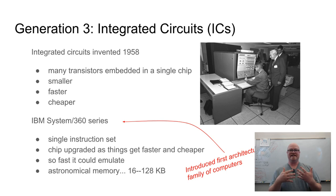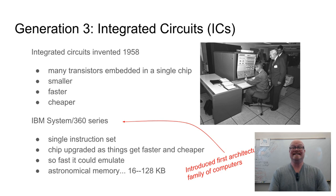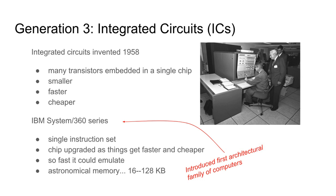In the integrated circuit era, we're really talking about putting more transistors in a smaller space more easily. Very soon after 1958, one of the more important computers in history came to light: the IBM System/360 series. This wasn't really a single computer — it was a family of computers — and it effectively introduced the first architectural family of computers. Before this, each computer was its own unique machine.